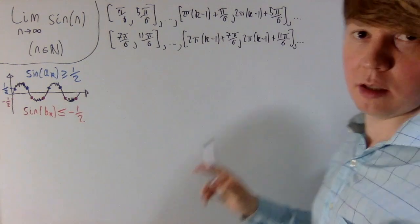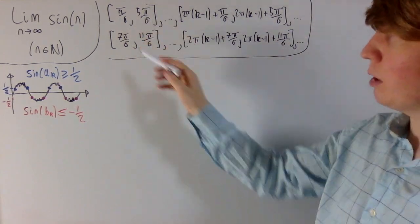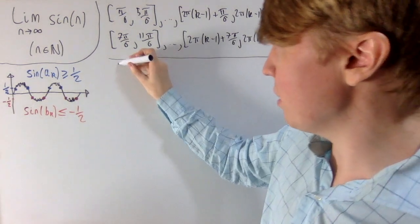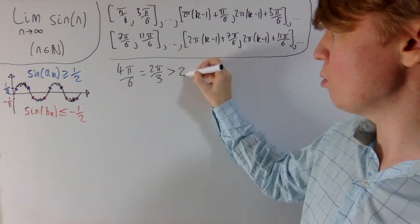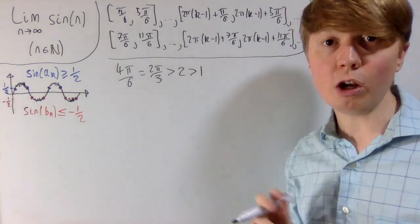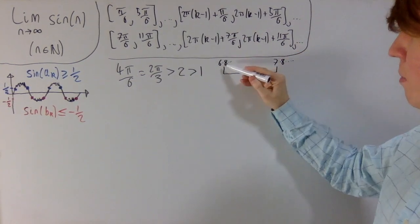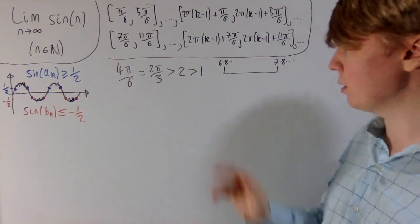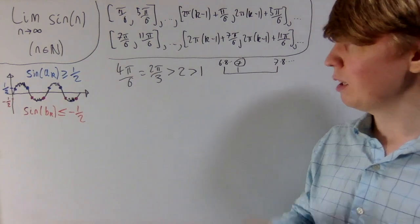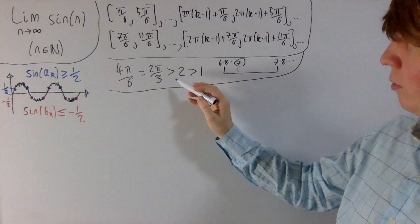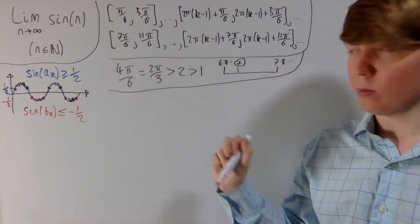How do we actually find an integer in each of these intervals? We check how wide they are. Each interval — from π/6 to 5π/6, or from 7π/6 to 11π/6 — has width 4π/6, which is 2π/3. Since π is greater than 3, this is greater than 2. All we really care about is this being greater than 1, because any interval of width greater than 1 must contain at least one integer. For example, an interval from 6.8 to 7.8 must contain the integer 7. So we only need one integer from each interval.